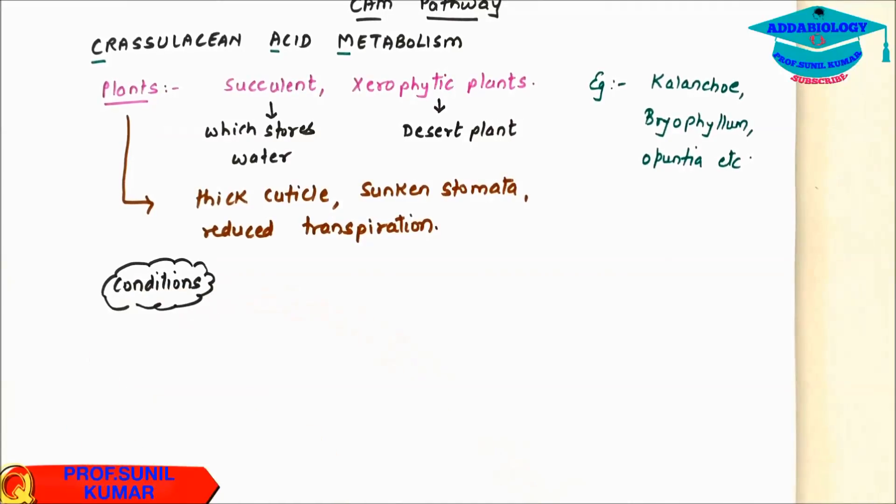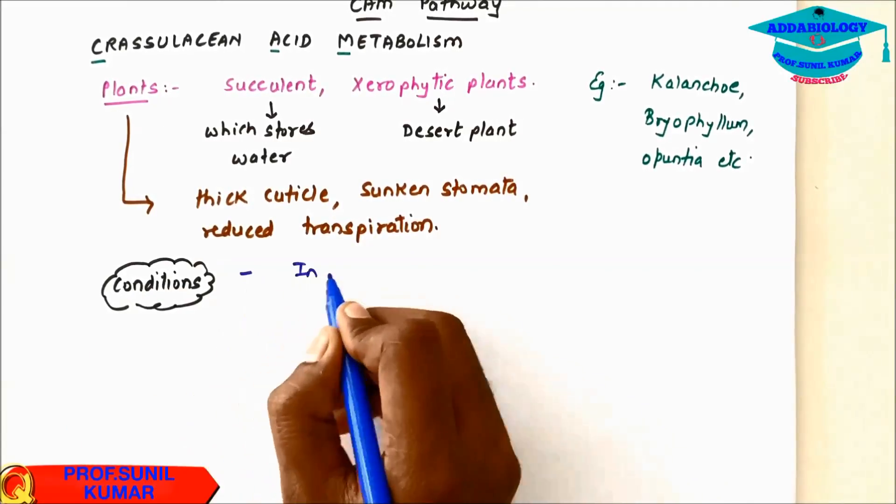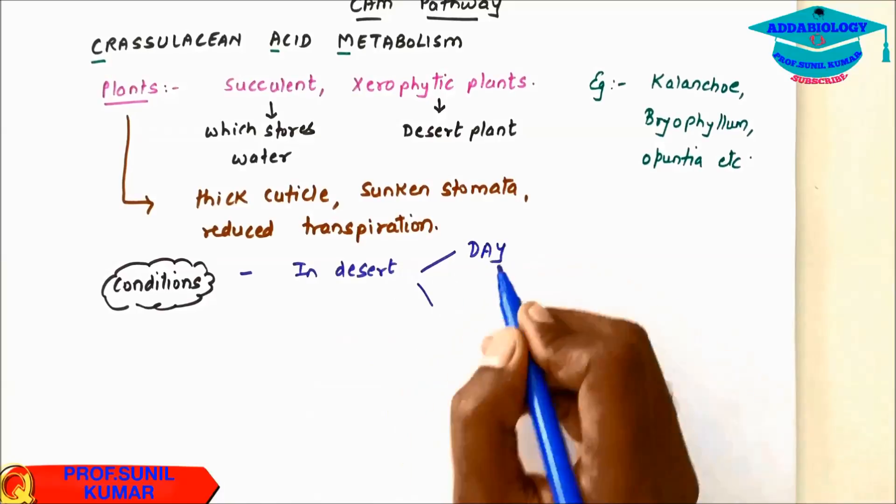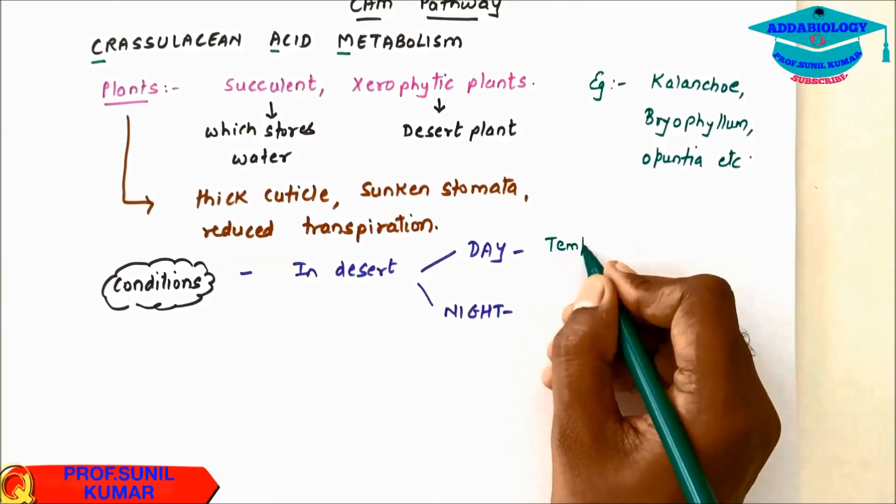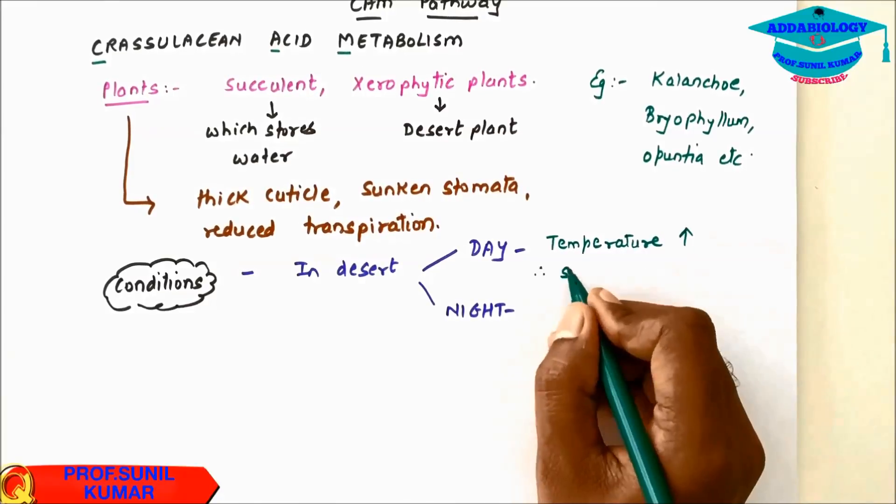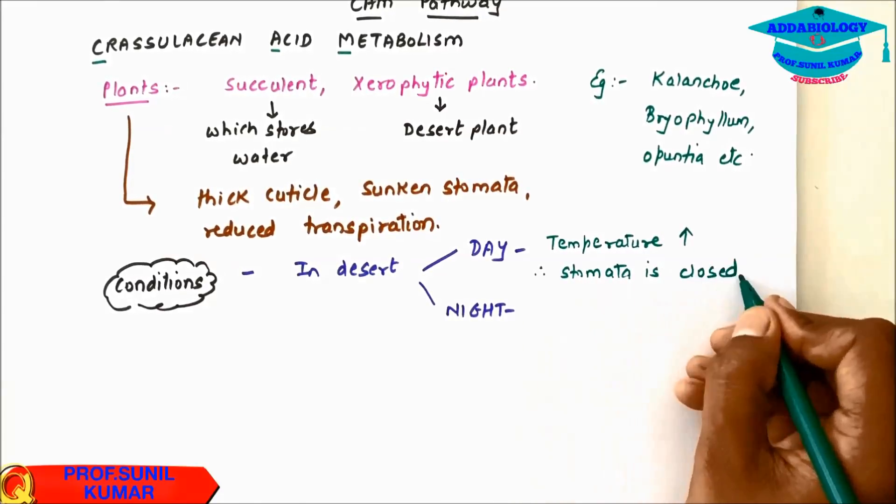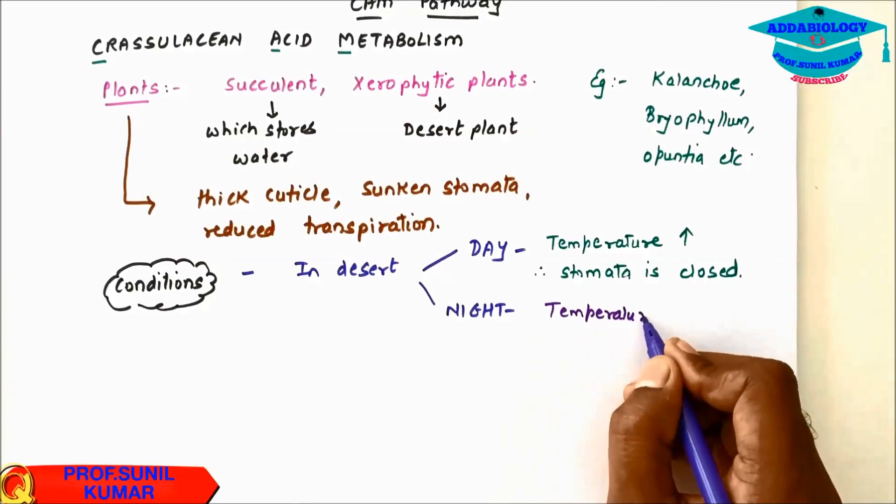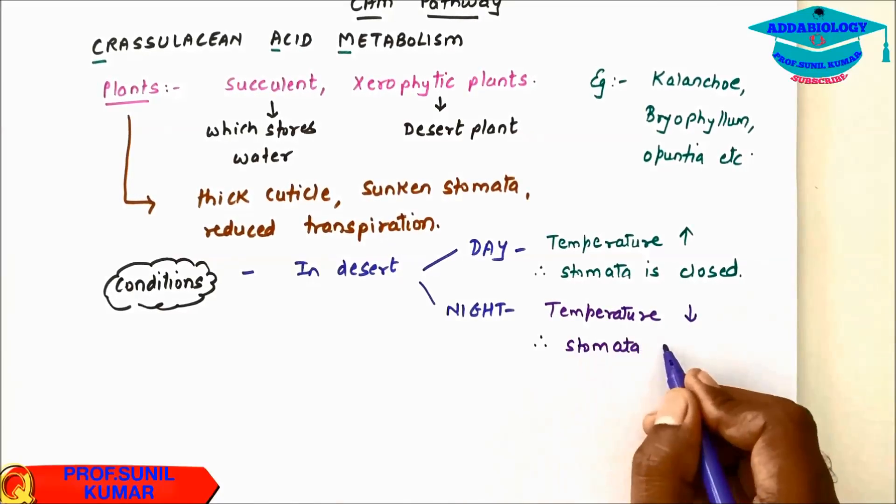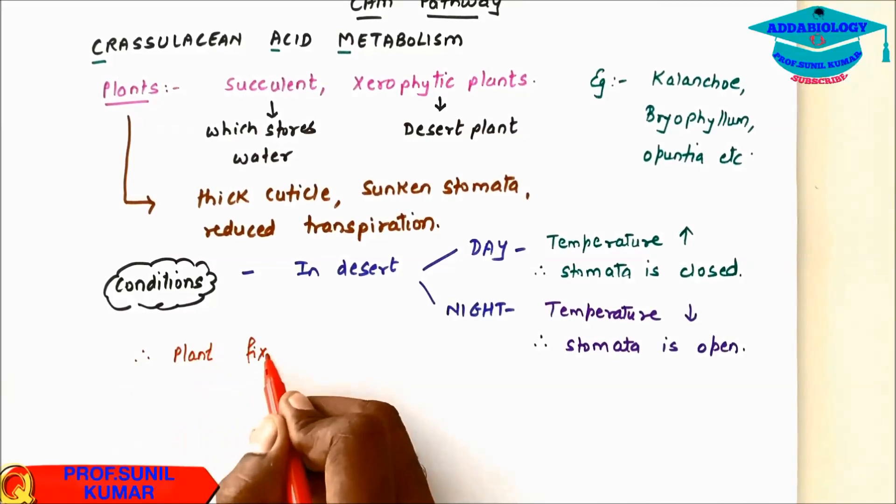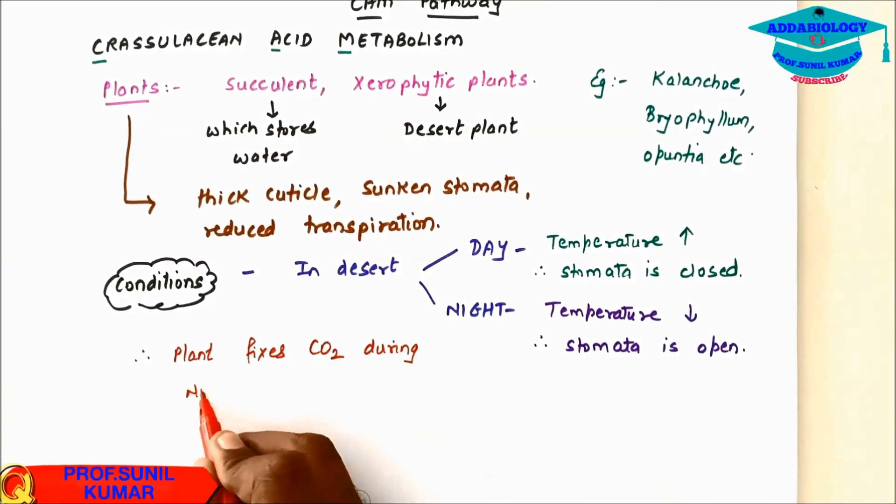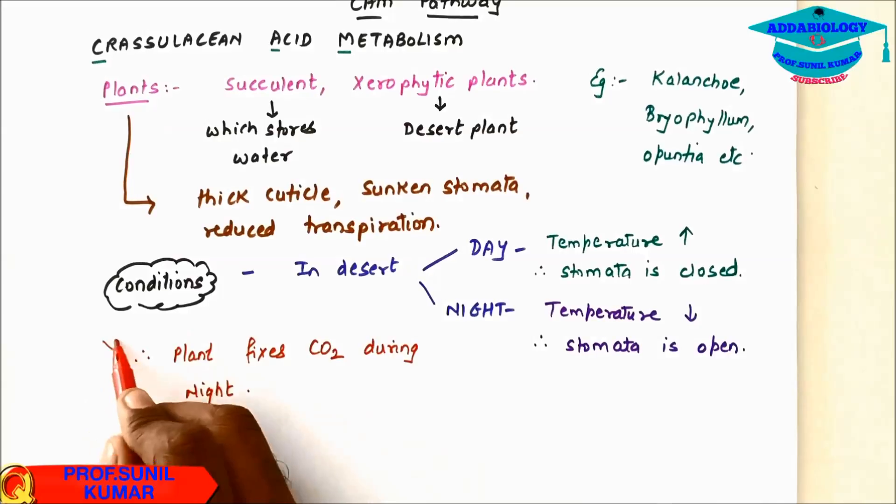In desert during day time and during night time. During day time the temperature is high so the stomata remains closed. During night time the temperature decreases therefore the stomata is open. Therefore I can say plant fixes carbon dioxide during night because of low temperature and stomata open.